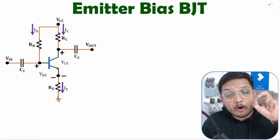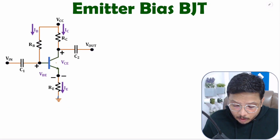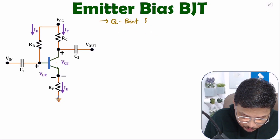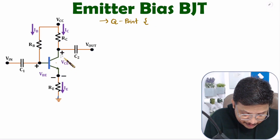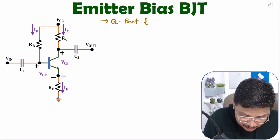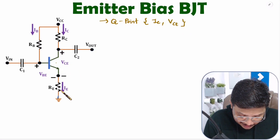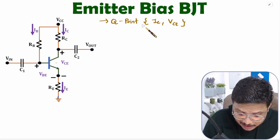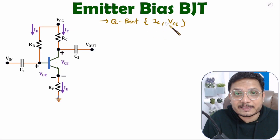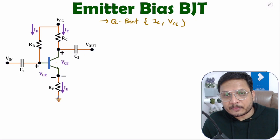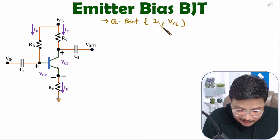By adding RE resistance in fixed bias you get emitter bias, and this improves the stability of the operating point. The operating point means the Q point. The output operating point has current IC and output voltage VCE. By adding RE we are improving the stability of IC and VCE.